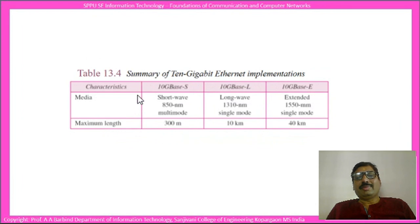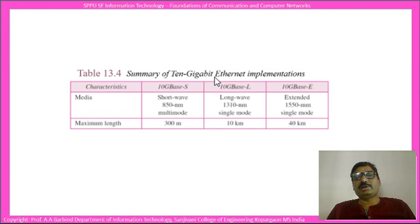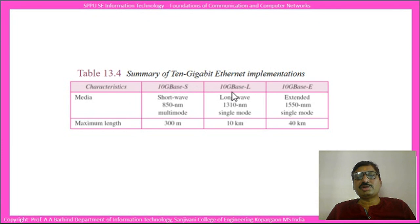Finally, the last one is the 10 Gigabit Ethernet implementation. In this implementation the speed is 10 Gbps. The topologies for 10 Gigabit Ethernet are similar to those of Gigabit Ethernet. A summary table covers 10GBase-S, 10GBase-L, and 10GBase-E implementations.